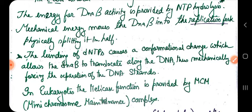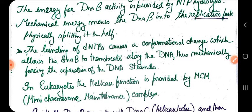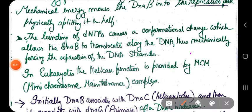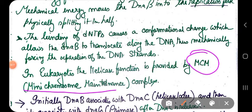Binding of nucleoside triphosphate causes a conformational change in DnaB so that DnaB can translocate along the DNA from 5' to 3' direction, mechanically forcing the separation of the DNA strands. In eukaryotes, the same function performed by DnaB is done by the MCM complex — Mini Chromosome Maintenance complex.